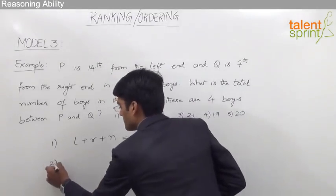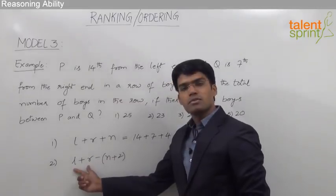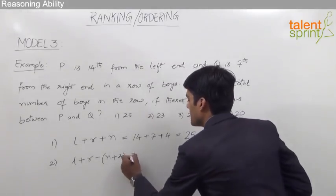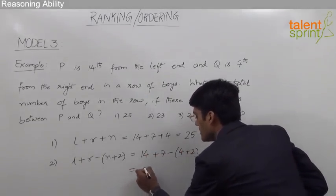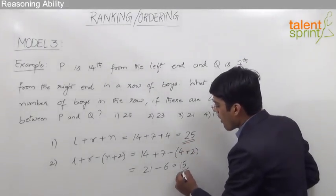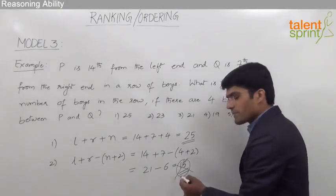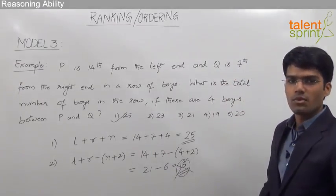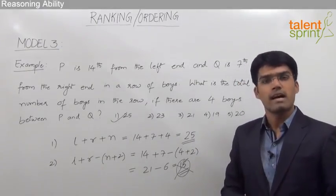The second possible answer is L plus R minus (N plus 2): 14 plus 7 minus (4 plus 2), which is 21 minus 6, that is 15. So the two possible answers are 25 or 15. As we can see from the given options, 15 is not available, and 25 is given in option 1, so the total number of persons in this row is 25. However, if both answers are available in the options, we should select the option that says 'cannot be determined.'